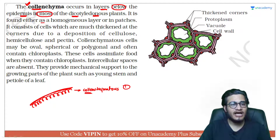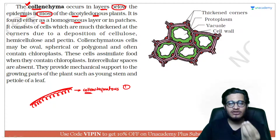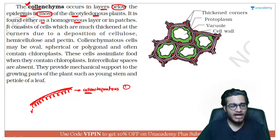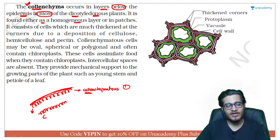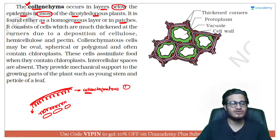Colenchyma is found either as a homogenous layer in the hypodermis, or it can be present in the form of small patches. So it can be present either as a continuous homogenous layer or as small patches.